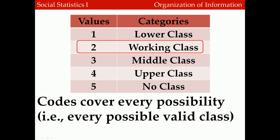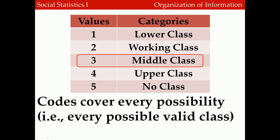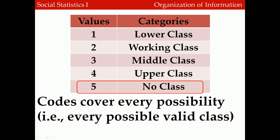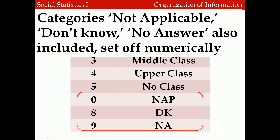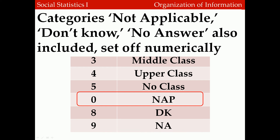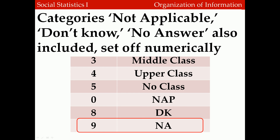All of the other class values also had distinct numbers. Working class people were coded as 2, middle class people received a value of 3, and 4 was used to code upper class people. People who indicated having no class were coded as 5. There are also codes for other answers set off numerically from the rest, used to indicate these values aren't supposed to be used in statistical analysis. For example, some people were not asked this question and were coded as 0 (non-applicable), some didn't know and were coded 8, and some left it blank and were coded 9 for no answer.